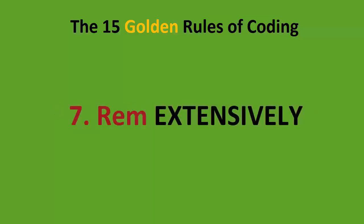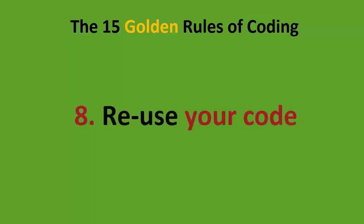Number seven: REM extensively. REM is short for remark, which means it's a comment in your code. When you work out what something does, if you add an apostrophe — and you're going to see this throughout the course — you can add a little note that describes exactly what that bit of code does. That makes it so much easier if you come back to the same code a year later and think, 'I don't know what that does.' We'll cover that in the course too.